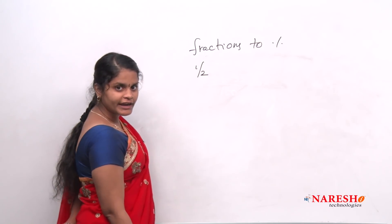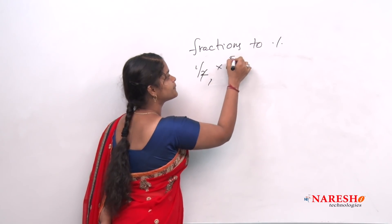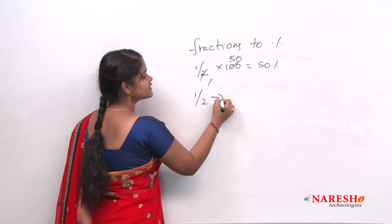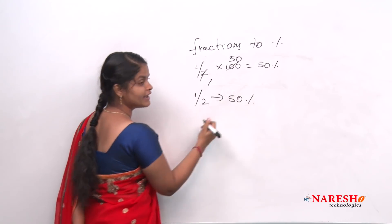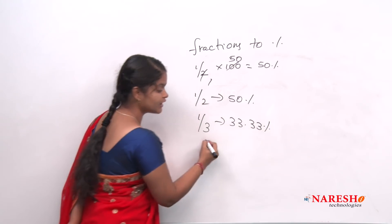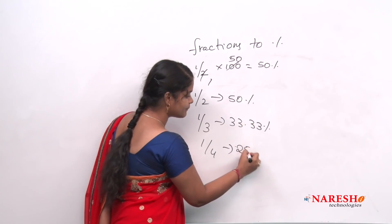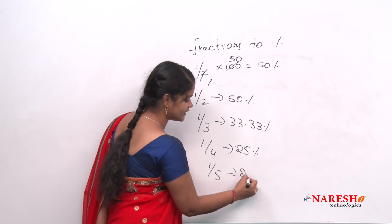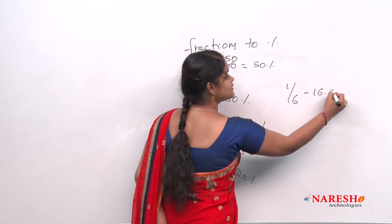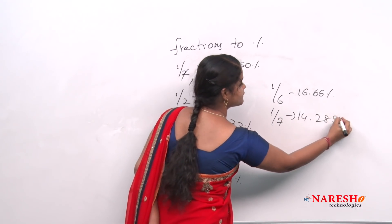For example, if I write 1/2, 1/3 is 33.33 percent. And 1/4, 100 by 4 nothing but 25 percent. 1/5, 20 percent. And similarly 1/6, 16.66 percent. 1/7, 14.2857.